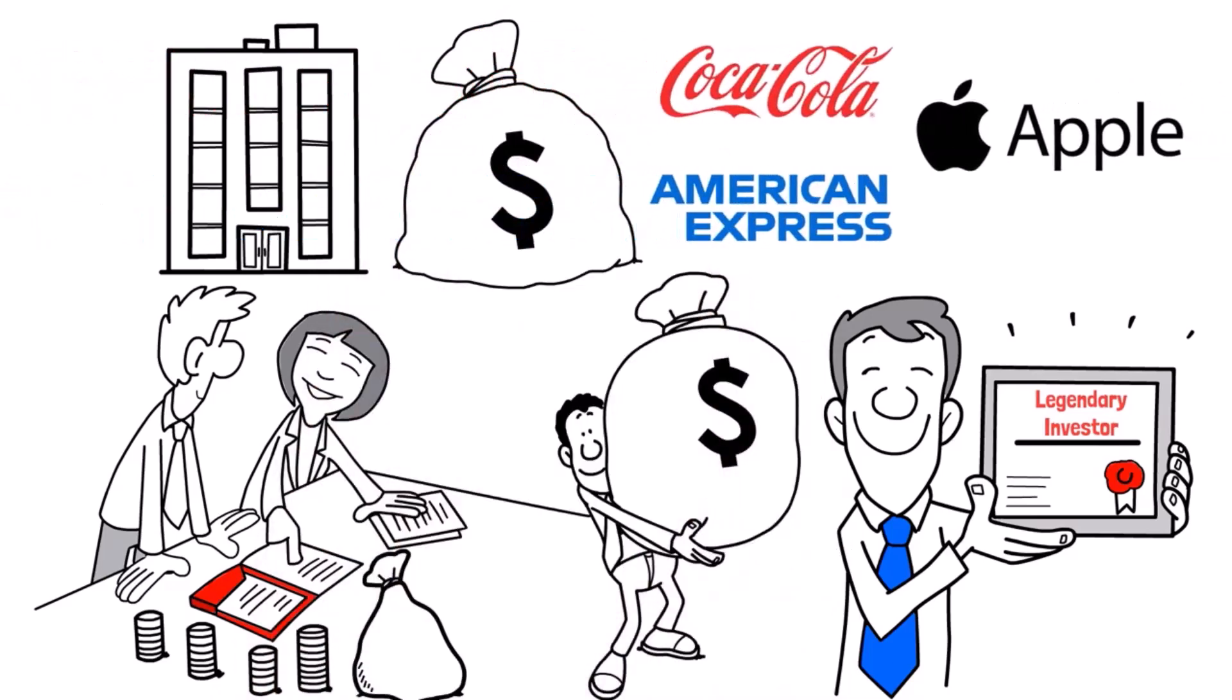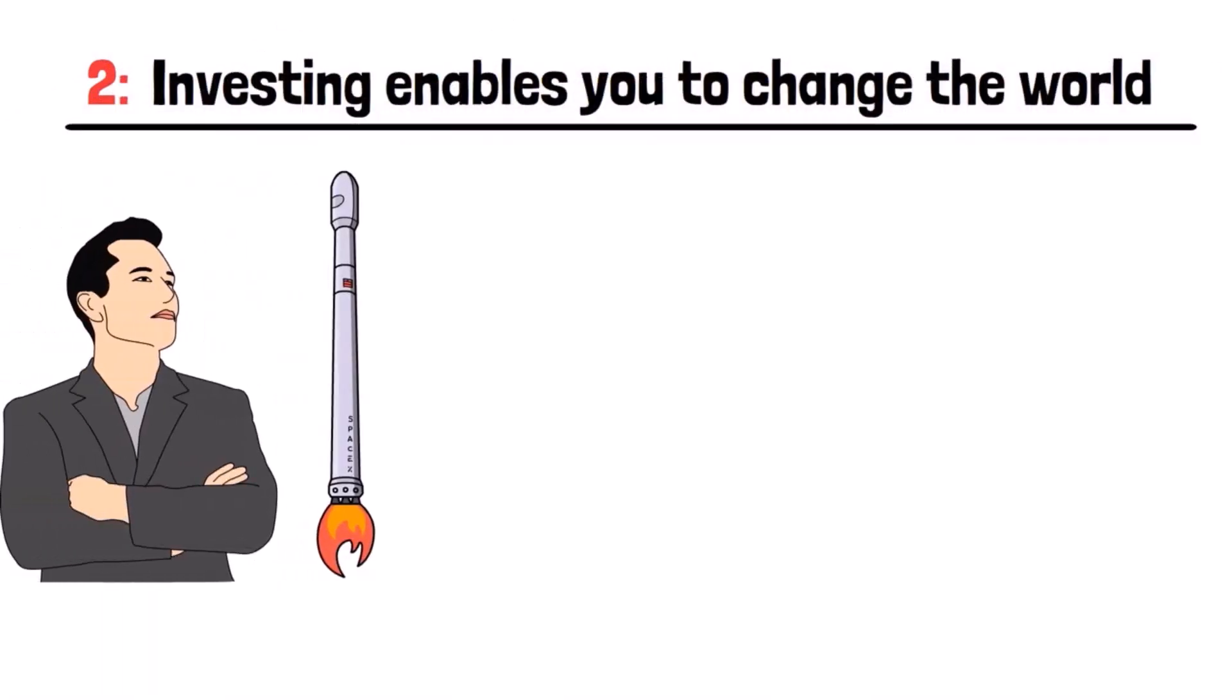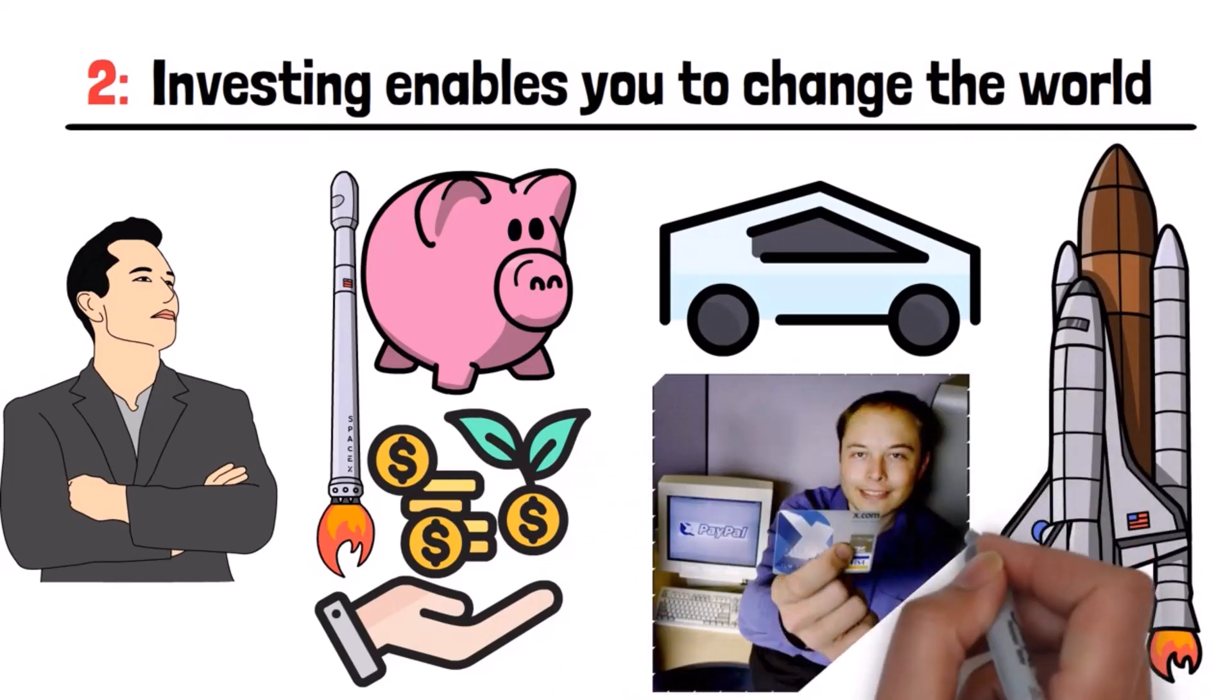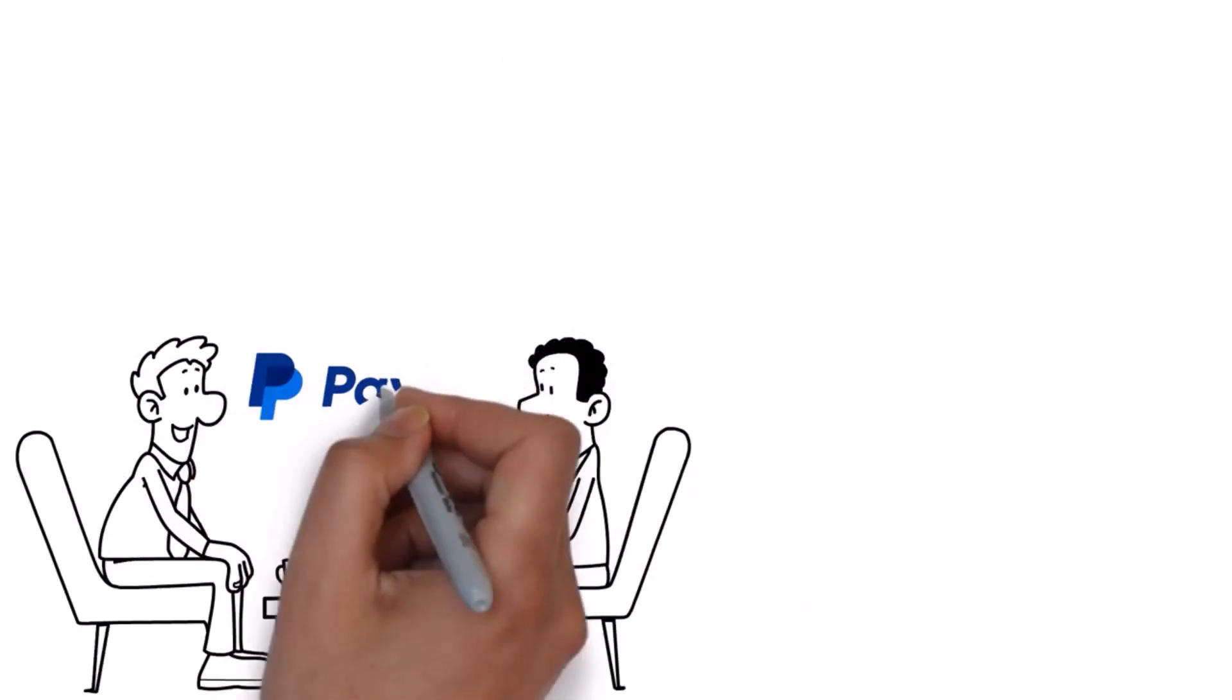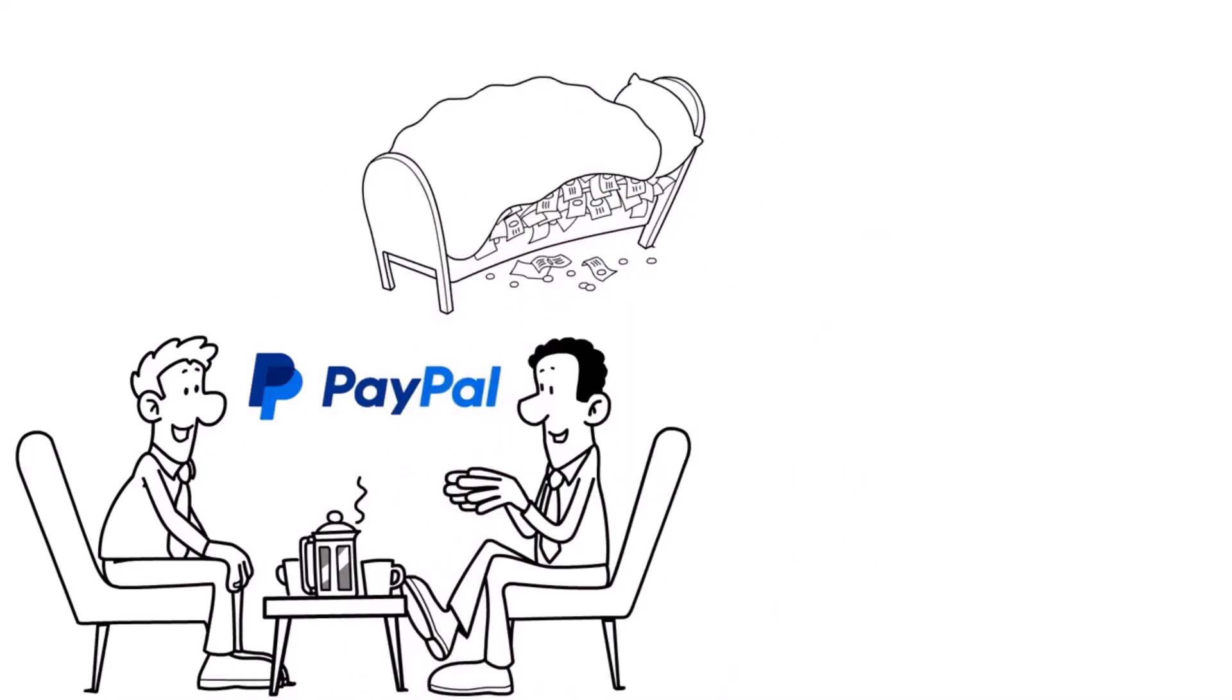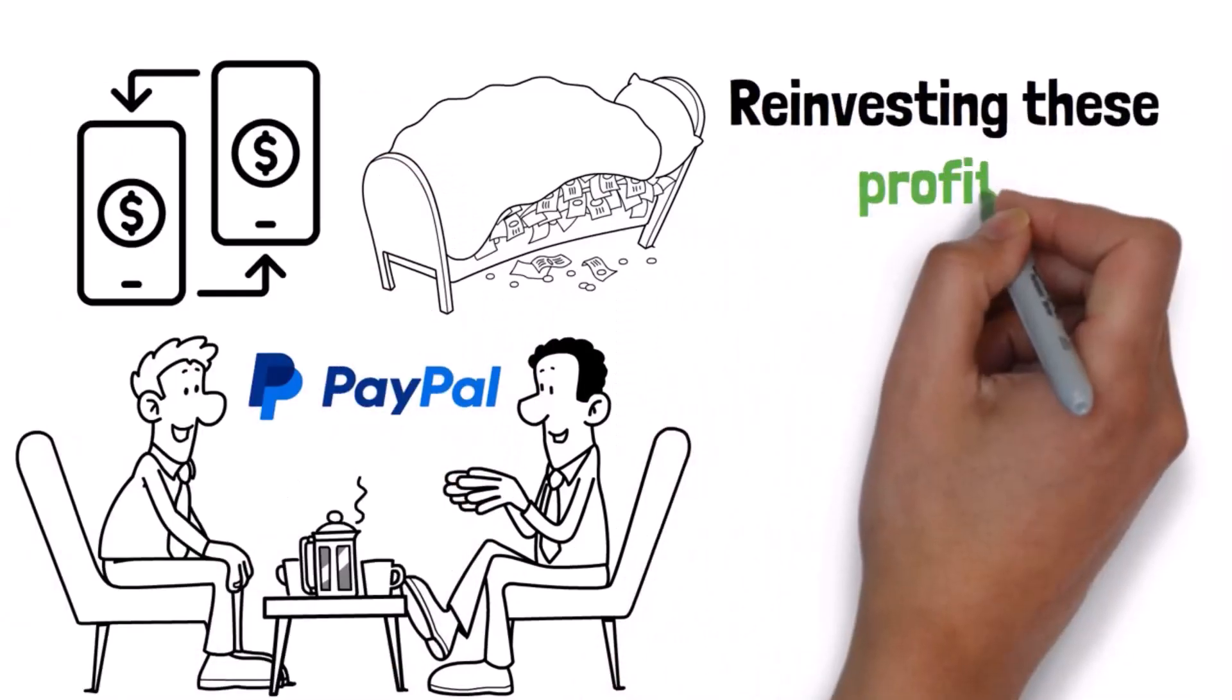Two, investing enables you to change the world. Elon Musk's journey vividly exemplifies how saving and investing can catalyze groundbreaking change. Starting with his earnings from the sale of Zip2, Musk invested wisely in ventures like PayPal, which not only secured his financial future but also facilitated the growth of online transactions globally.